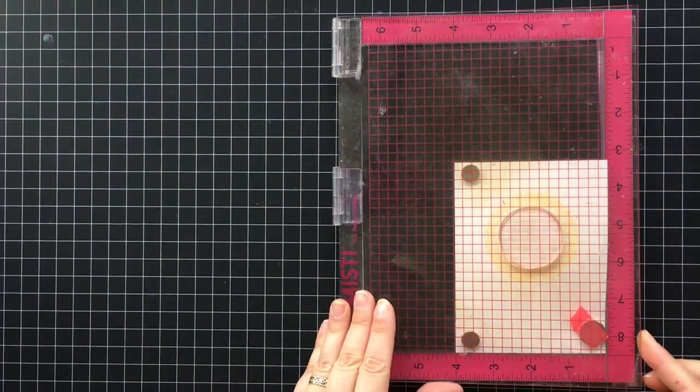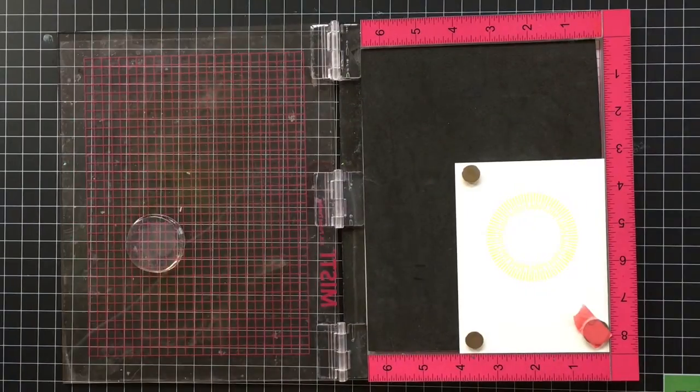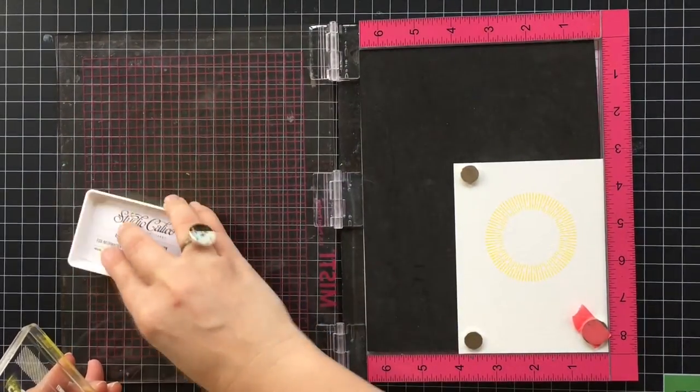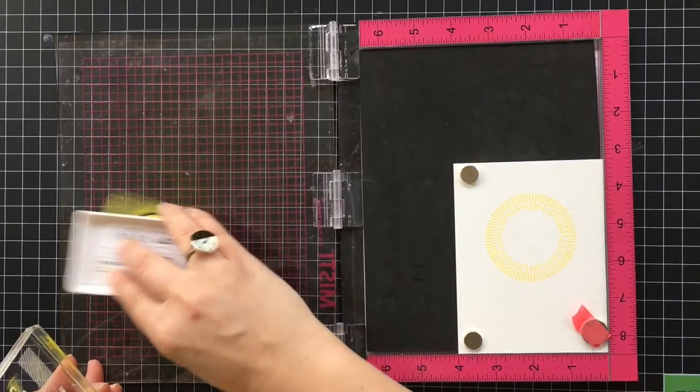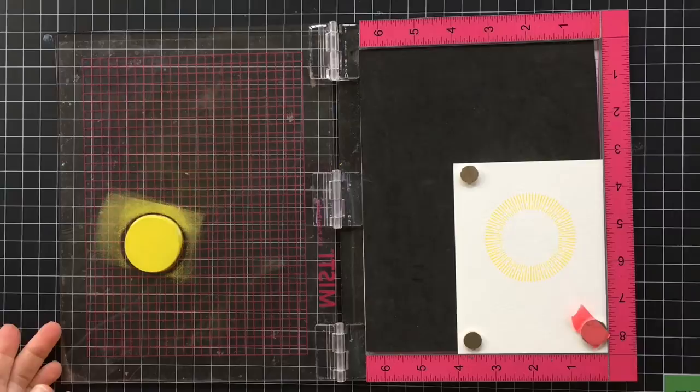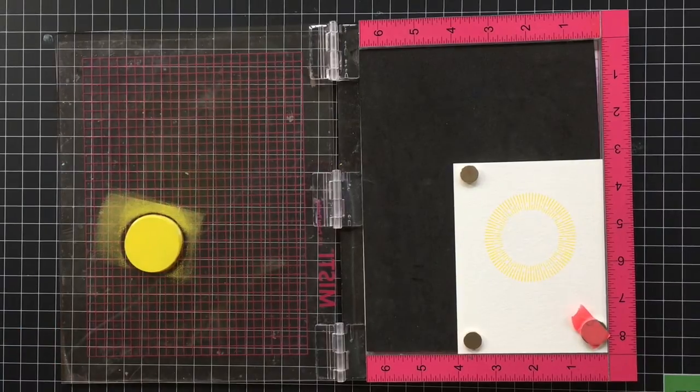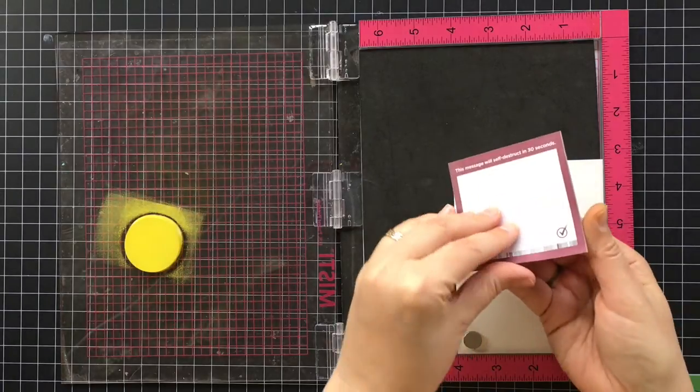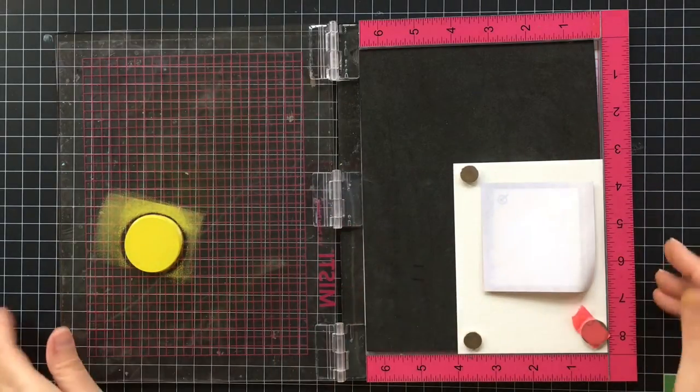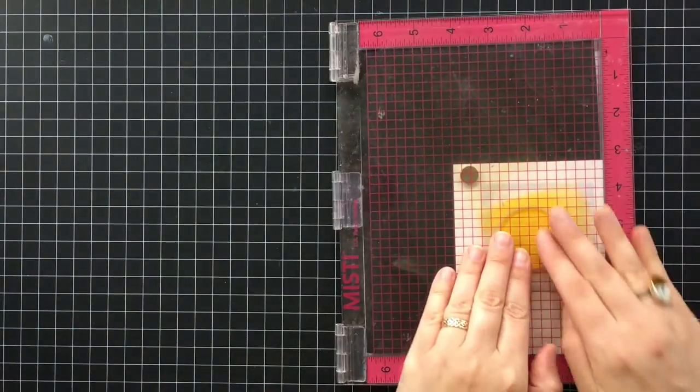Once again you just close the lid and that will pick up the stamp. Then I'm going to show you a fun inking technique here. I have the stamp and I'm getting it really nice and inked up, and before I stamp it I'm going to get a post-it note and I'm going to put it over where the stamp would go.